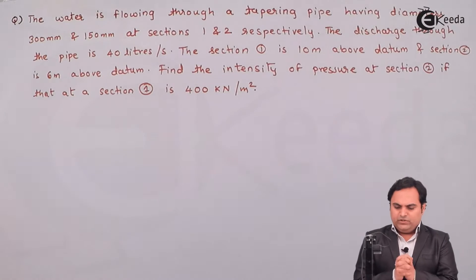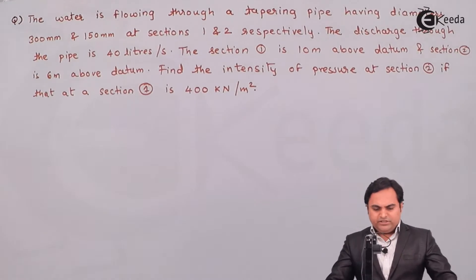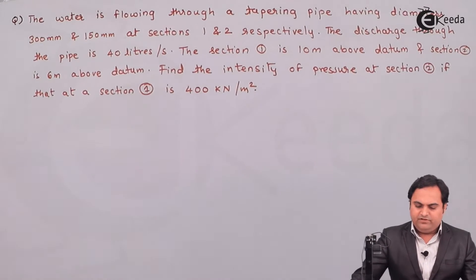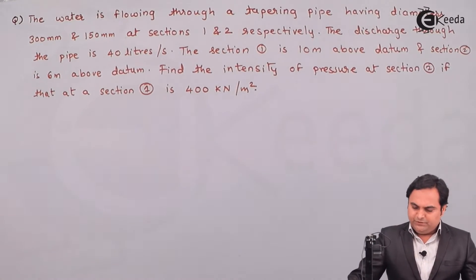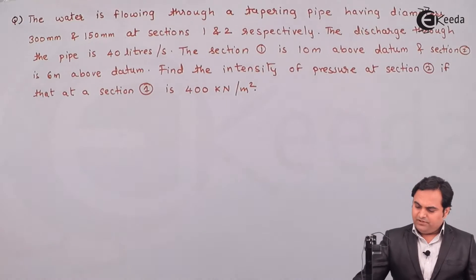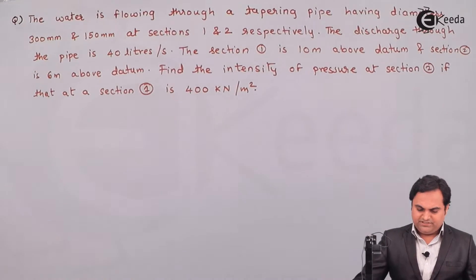Hello friends, here in this video we'll see a Bernoulli's equation problem. The water is flowing through a tapering pipe having diameters 300 mm and 150 mm at sections 1 and 2 respectively. The discharge through the pipe is 40 liters per second.